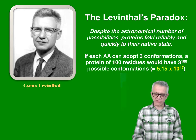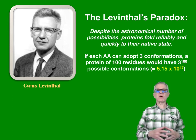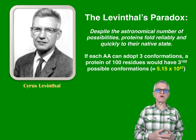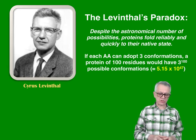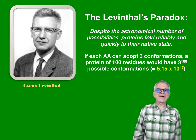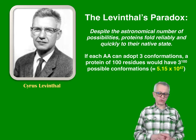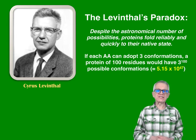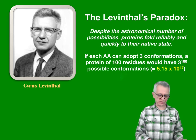Here is the rationale for Levinthal. If each amino acid residue can adopt three conformations, a protein with 100 residues would have 3 to the power of 100 conformations, which gives us 5.15 times 10 to the power of 47 conformations — and this is for a protein of only 100 amino acids.